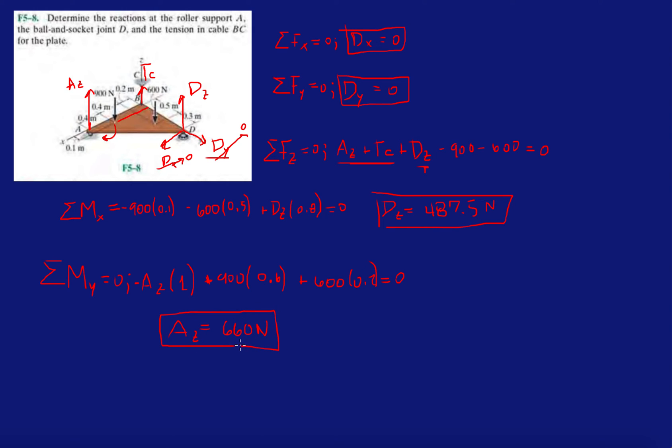Now I found the reactions at A and D, and all that's left to do is find TC, the tension in that cable. From this equation right here, we're just going to plug in AZ and find TC. So TC equals 900 plus 600 minus 487.5 minus 660, which is 352.5 newtons.